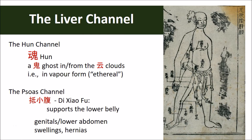The liver channel rises at the big toe's cluster of hair, goes up the top of the foot and instep, one sun below the inner ankle, then above the ankle for eight sun, meeting the spleen Tai Yin and coming behind it, up to the knee fossa, following the thigh's yin, entering the hair center, crossing the genitals, propping up the small abdomen, pressing the stomach, subordinating the liver, and networking with the gallbladder. It then pierces the diaphragm, spreads along the ribs and flanks, follows the back of the larynx, goes up to enter the forehead and temple, connecting with the eye system, coming out at the forehead and meeting with the governor vessel at the summit. A second branch goes from the eye system down to the inside of the cheek, circling the inside of the lips.